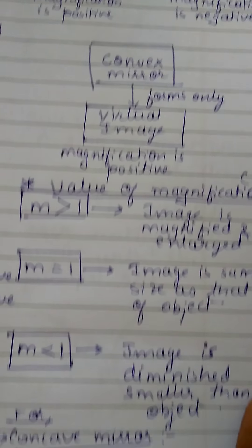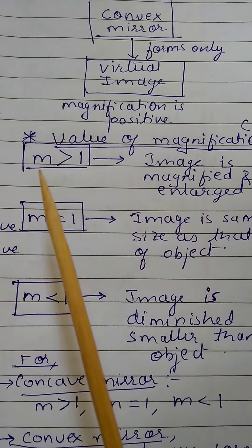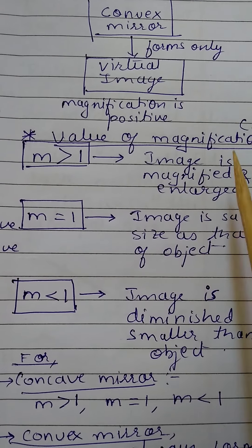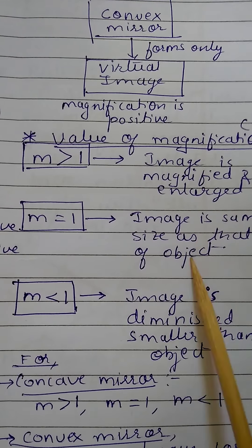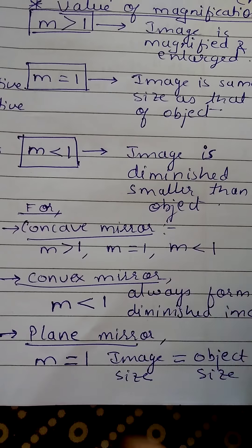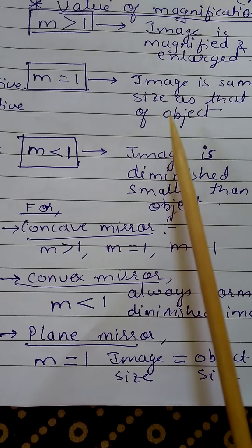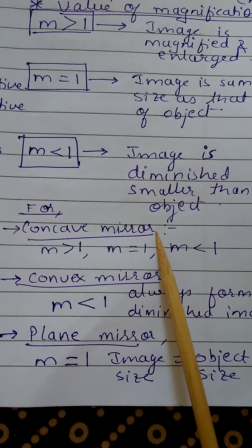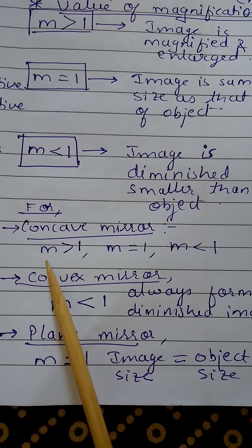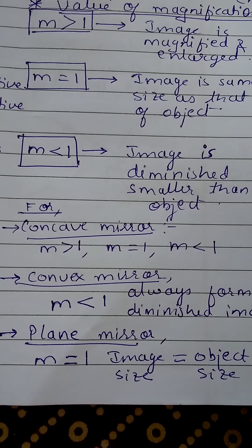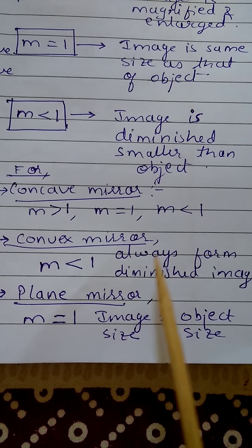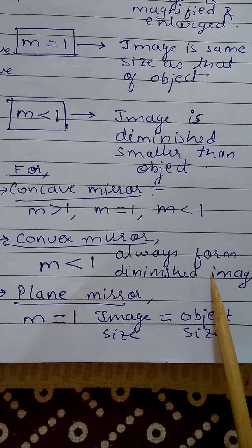This is the sign convention and value of magnification. If the magnification value is greater than 1, the image is magnified and enlarged. If it is equal to 1, the image is of the same size. If it is less than 1, the image is diminished or smaller in size than the object. For a concave mirror, because it can form all three types of images, m could be greater than 1, equal to 1, or less than 1. For a convex mirror, m is always less than 1 because always diminished images are formed behind the mirror.